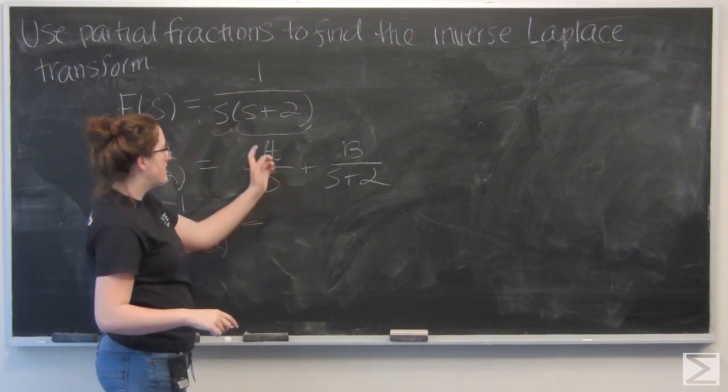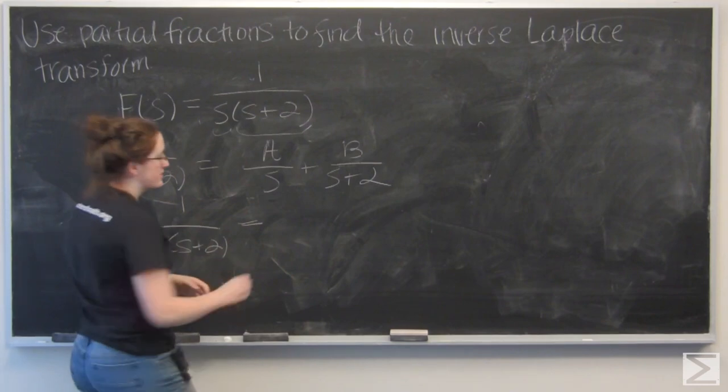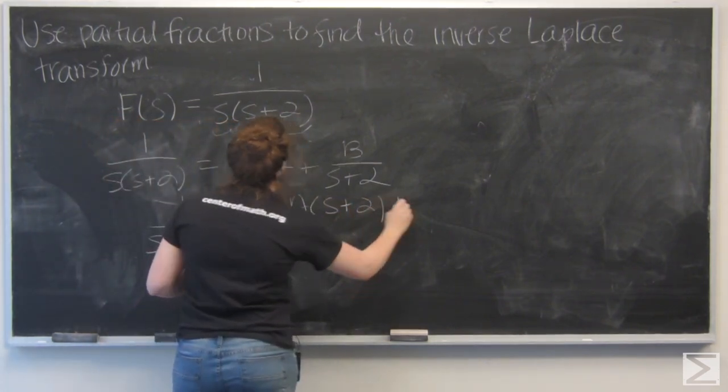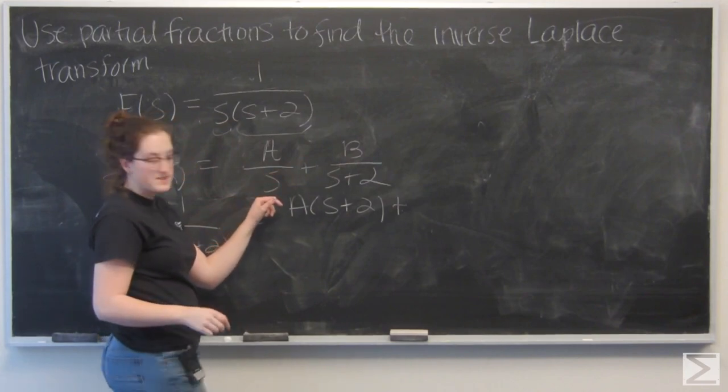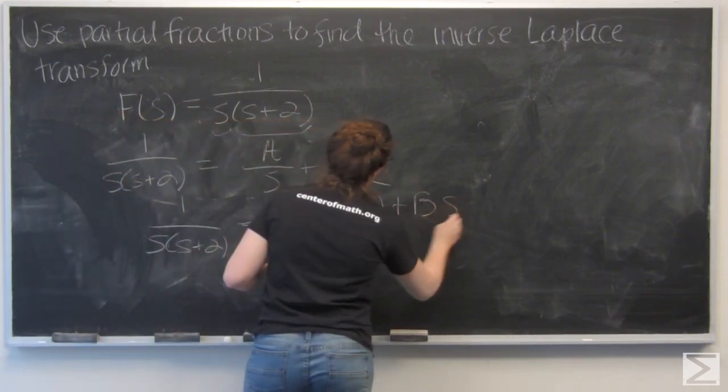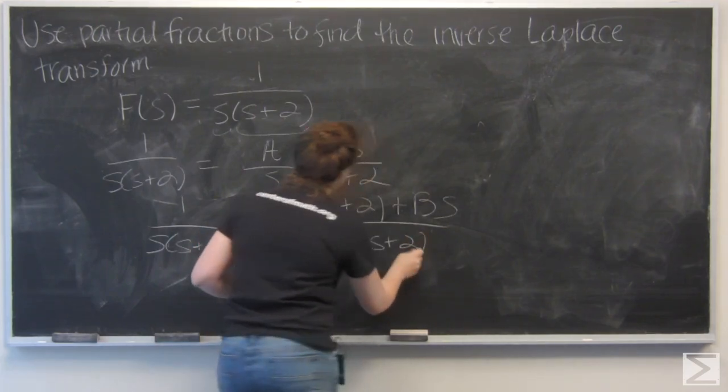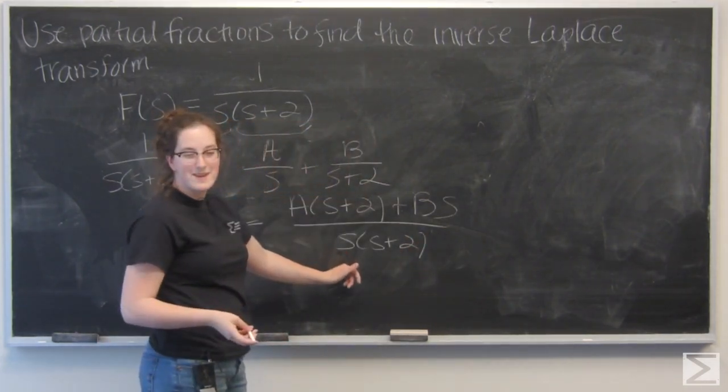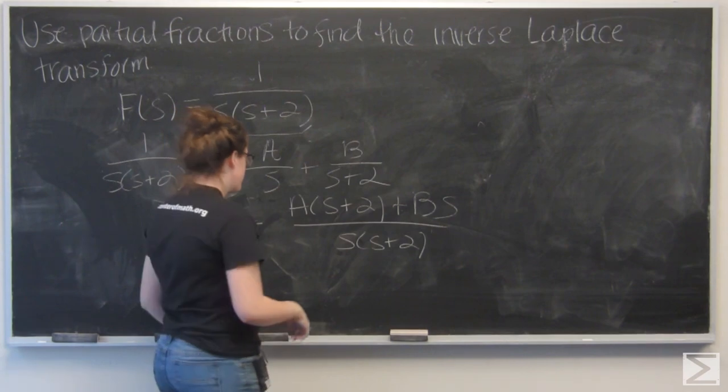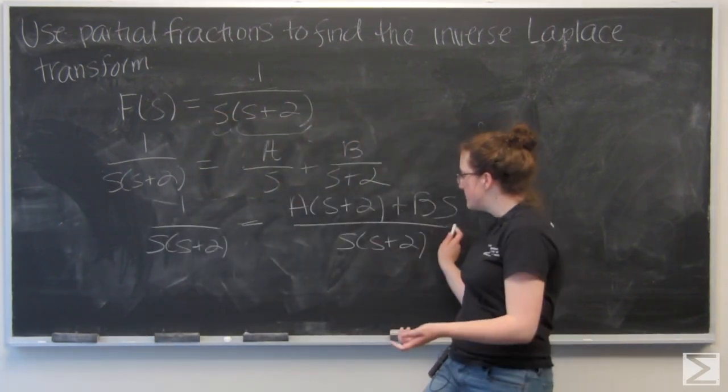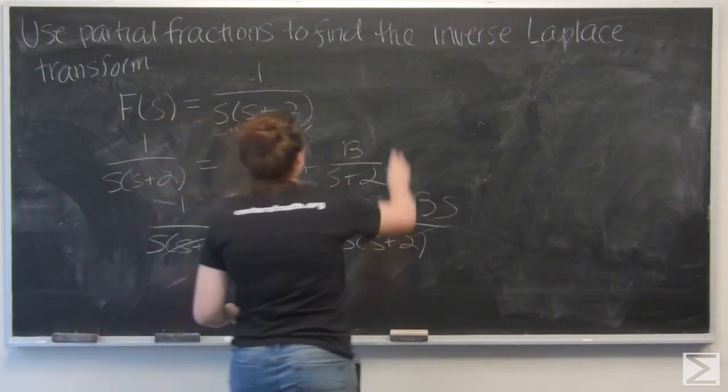Here I'm going to cross multiply. So I've got a times s plus 2 plus b times s. That gives me the common denominator s, quantity s plus 2. Now I can go ahead and cancel the denominator on both sides and move up here.